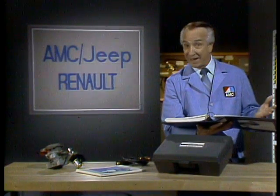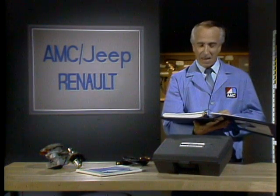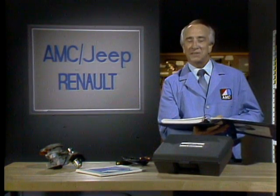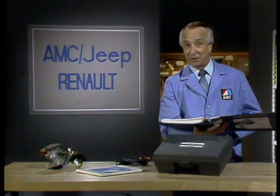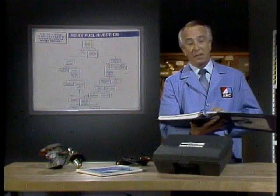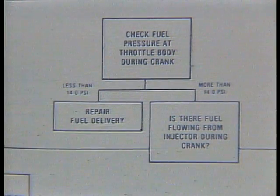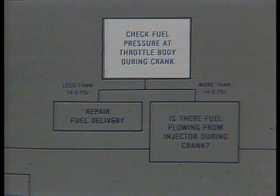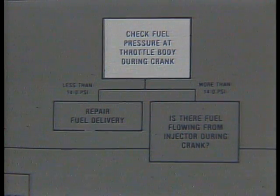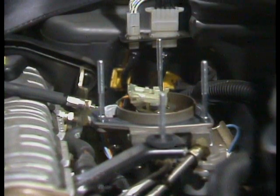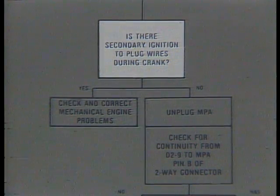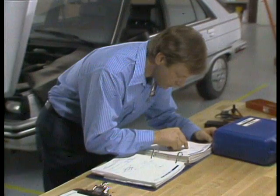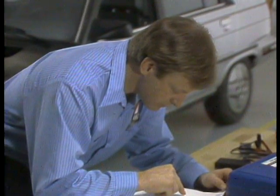Fault 356 means that the tester does not find a fault with the TBI system per se. The manual shows the steps we took. First, we checked the fuel pressure at the throttle body during engine crank — that was up to spec. Then we looked to see if there was fuel flowing from the injector during crank — that was okay too. The book asks if there is secondary ignition to plug wires during crank. No spark there. So we followed the tester manual through a few more steps.